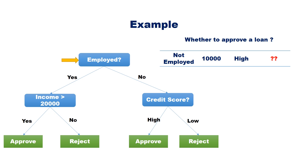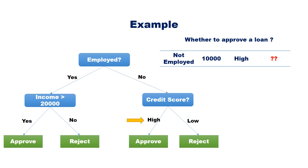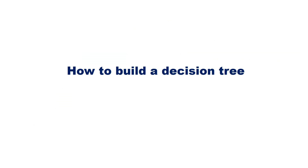We can start from the root node. Check whether the person is employed or not. The applicant is not employed, so go to the branch with the label no. The next decision node is the credit score. The applicant has a high credit score, so follow the branch with label high. The next is the leaf node approved. Hence, the new application can be classified as approved.